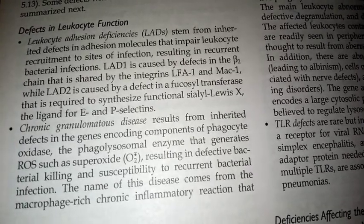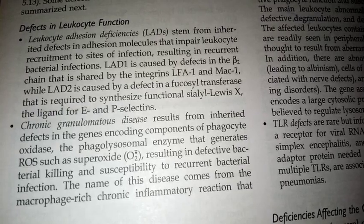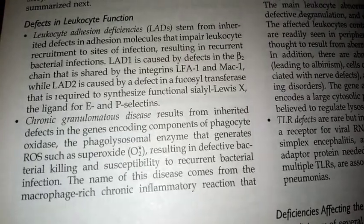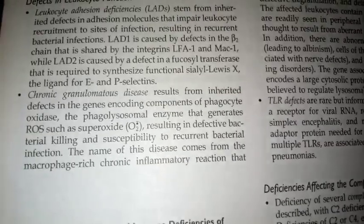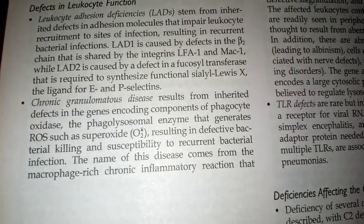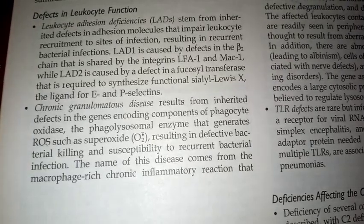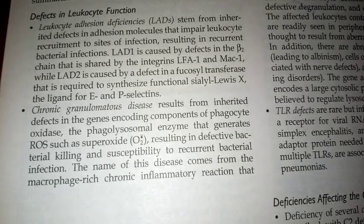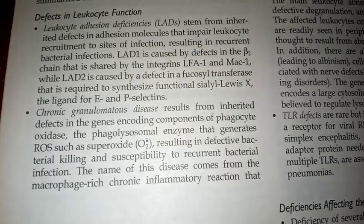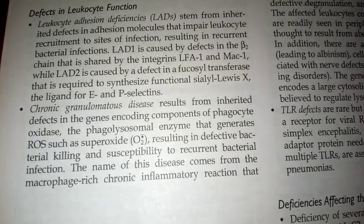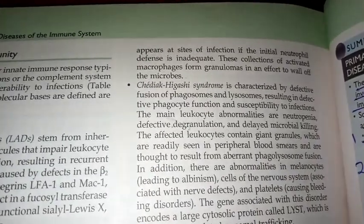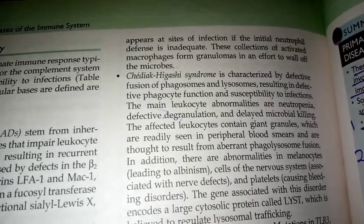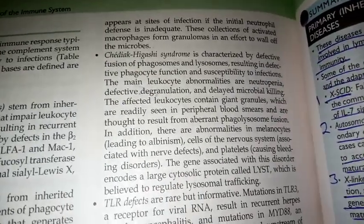The second defect is chronic granulomatous disease, an inherited defect in the genes encoding components of the phagocyte oxidase and phagosomal enzymes that generate reactive oxygen species (ROS) and superoxide, resulting in defective bacterial killing and susceptibility to recurrent bacterial infections. The name comes from the macrophage-rich chronic inflammatory reactions that appear at sites of infection when the initial neutrophil defense is inadequate, forming granulomas that wall off microbes.